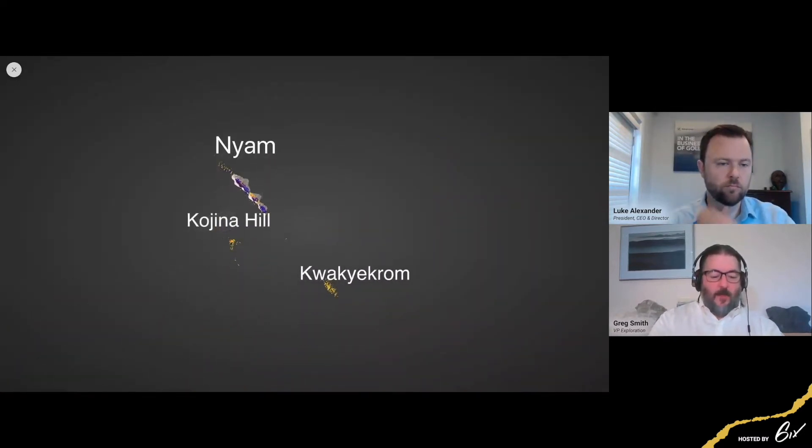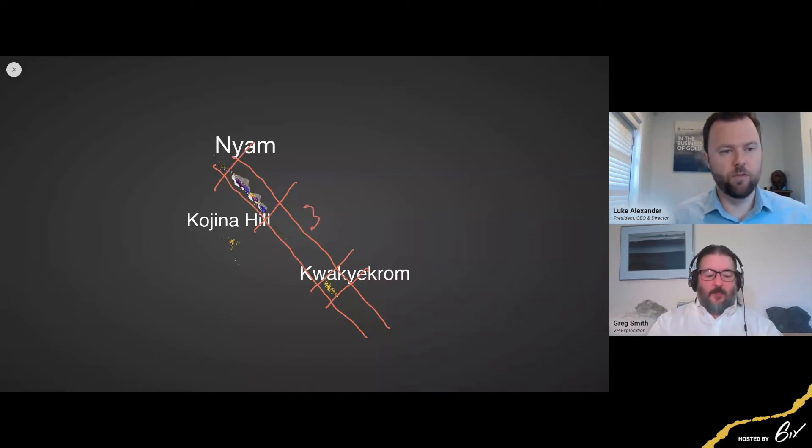So we did look at NIAM, and I've mentioned that these are structurally controlled. For us, the interpretation at this point is that Quachicroom is actually an extension of the NIAM deposit. We've got the 1.8 kilometers that we've tested at NIAM. Currently at Quachicroom, we've tested about 0.7 kilometers. We've got about three kilometers between the two, and we do have surface anomalies within this area. So it really starts to build quite a compelling target when you look at these in the larger picture.